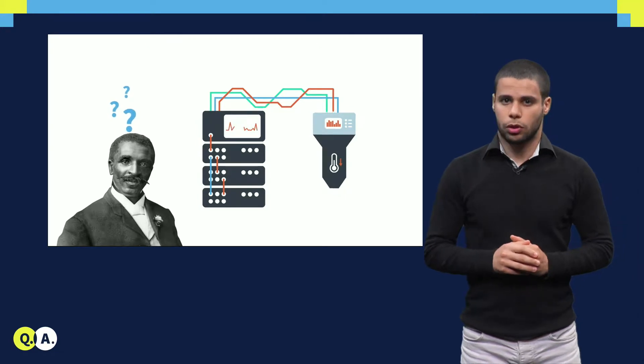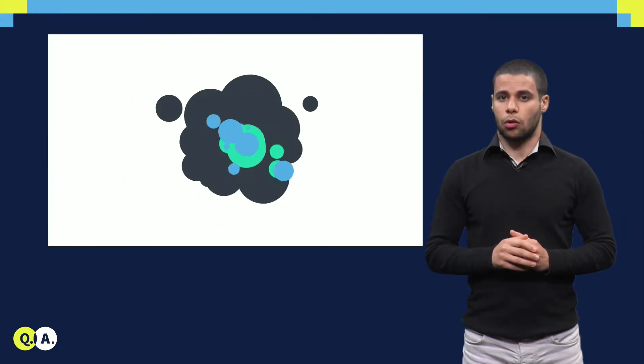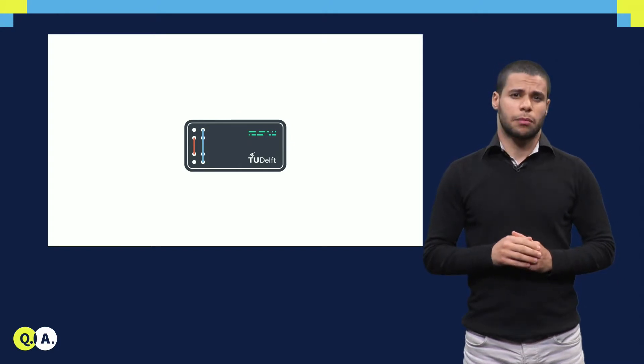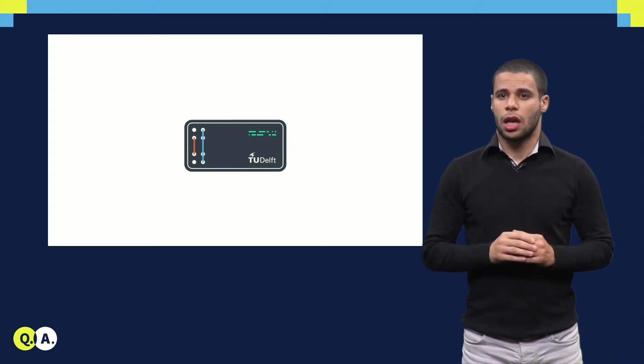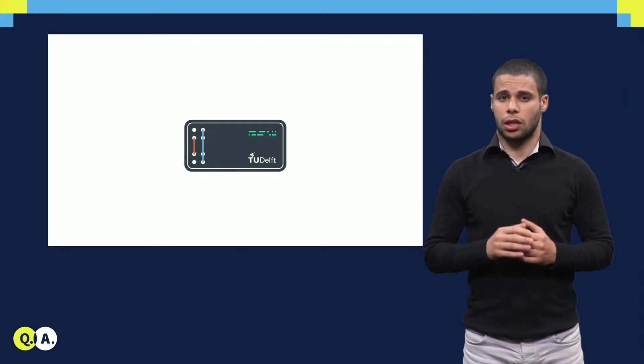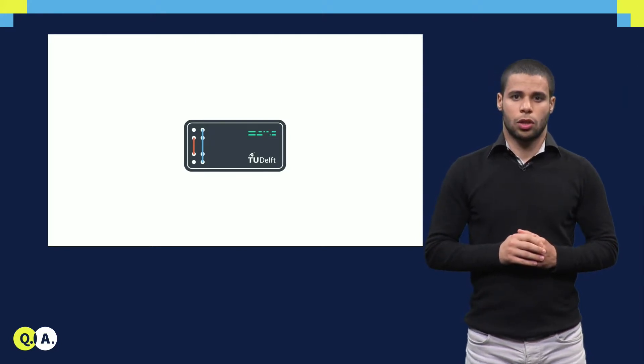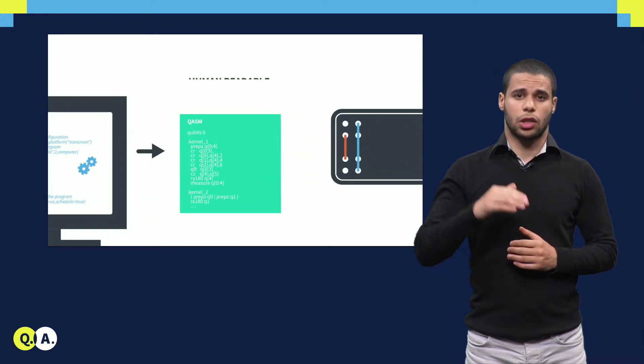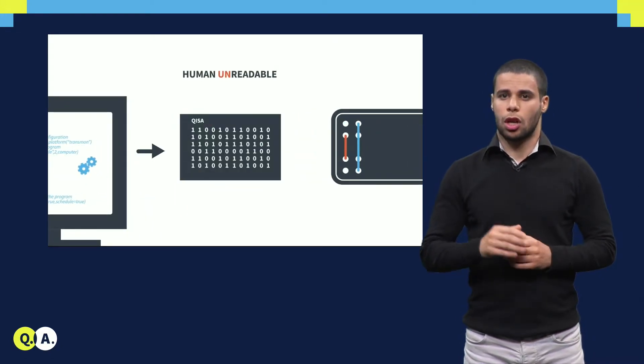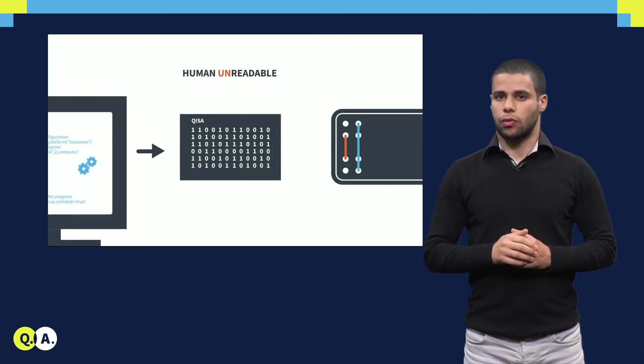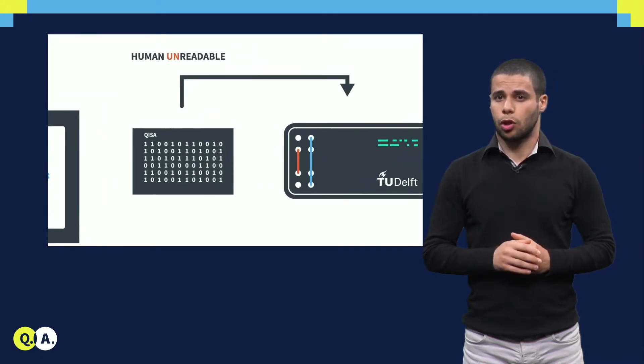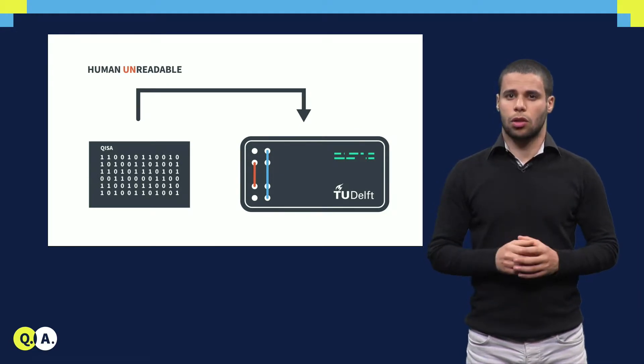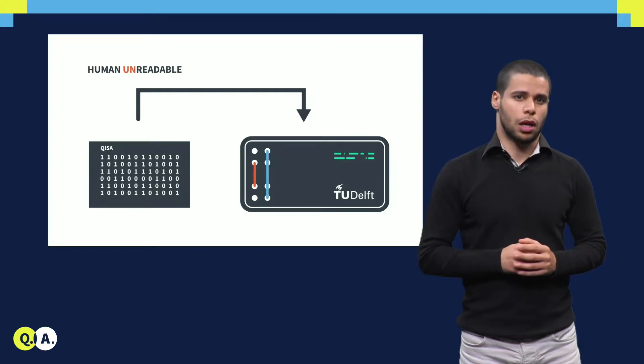Programming a quantum computer requires that it be programmable in the first place, meaning it should have a microarchitecture capable of executing instructions. The user can write their algorithm using a high-level language such as OpenQL, compile it to transform human-readable code into executable code, and execute the binary on the quantum computer hardware.